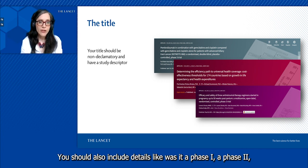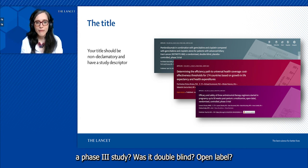You should also include details like was it a phase one, phase two, phase three study, was it double-blind or open label.